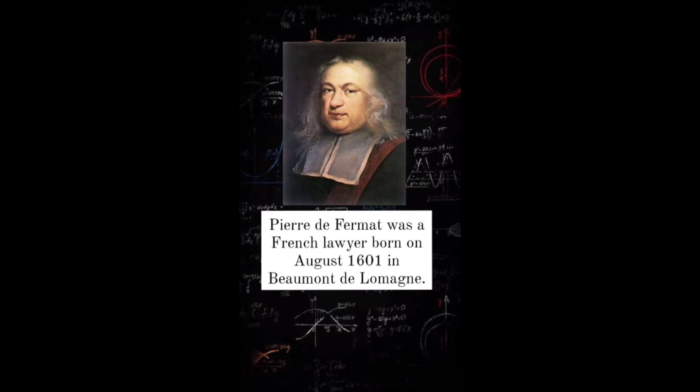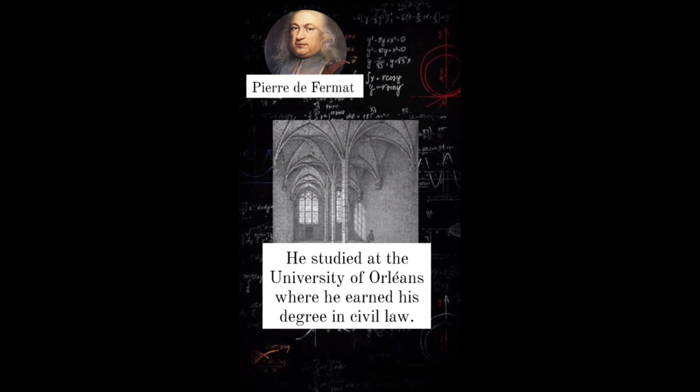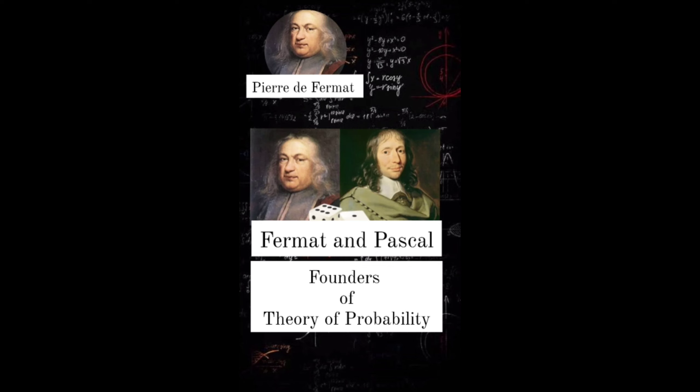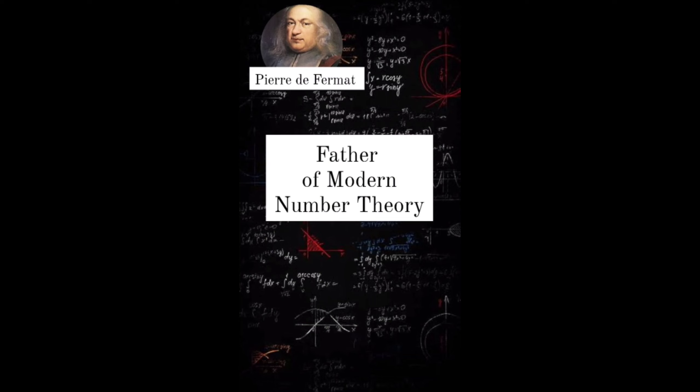Pierre de Fermat was a French lawyer born in August 1601 in Beaumont-de-Lomagne. He studied at the University of Orleans where he earned his degree in civil law. He was a lawyer by profession and took mathematics as a hobby only. Working with Blaise Pascal, he became the co-founder of the theory of probability. He was the father of modern number theory. In fact, most of his works are concentrated in number theory.